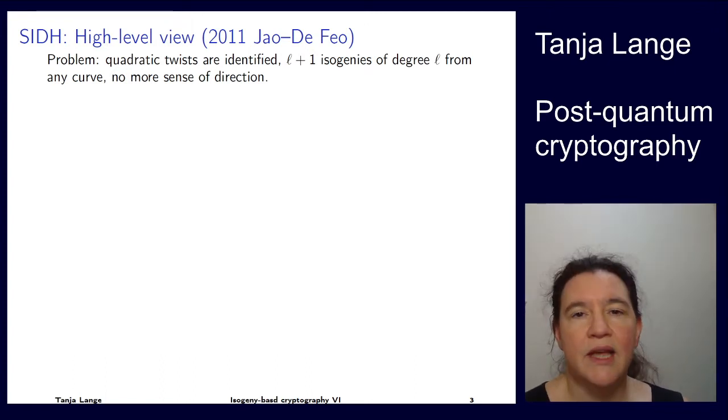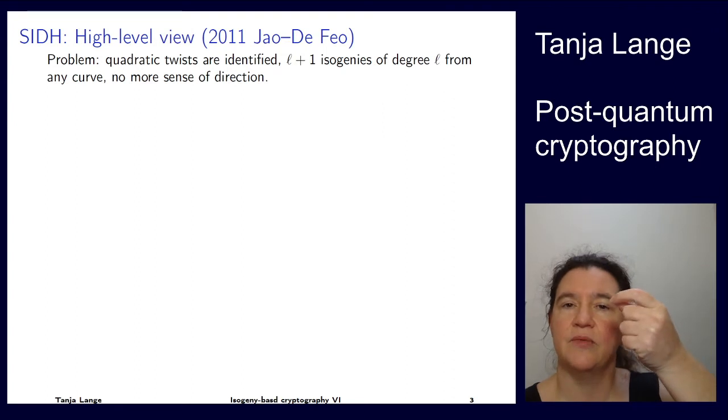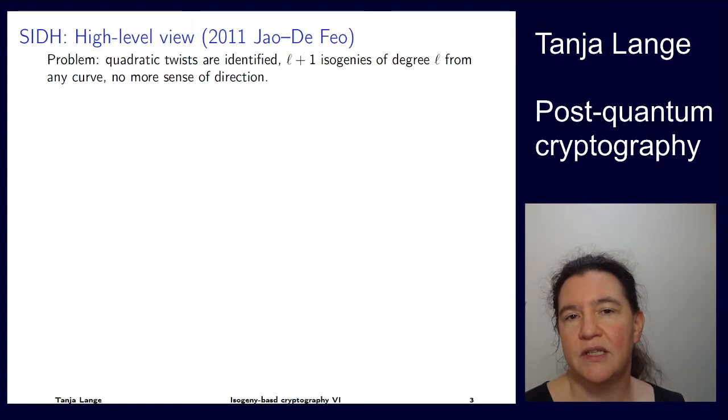When you're looking at supersingular curves over fp squared, then each J-invariant, when you're looking at L-isogenies, then from each node there are exactly L plus 1 edges going out of it. There are these L plus 1 isogenies of degree L from any curve. That is because the group of L torsion points corresponds to Z mod L times Z mod L. And so each subgroup uniquely corresponds to an L-isogeny.